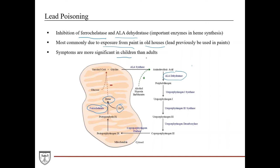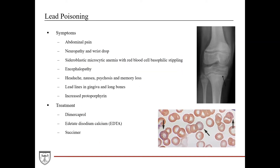Symptoms are more significant in children than they are in adults. Lead poisoning really wreaks havoc — you see a lot of inflammation and symptoms across the body. You see abdominal pain. It really interferes with synapse development within the central nervous system and causes a lot of inflammation there. In children, it affects the developing brain and can cause significant neurological problems, but it can also cause neurological problems in adults. You can have neuropathy, wrist drop, encephalopathy, headache, nausea, psychosis, and memory loss.